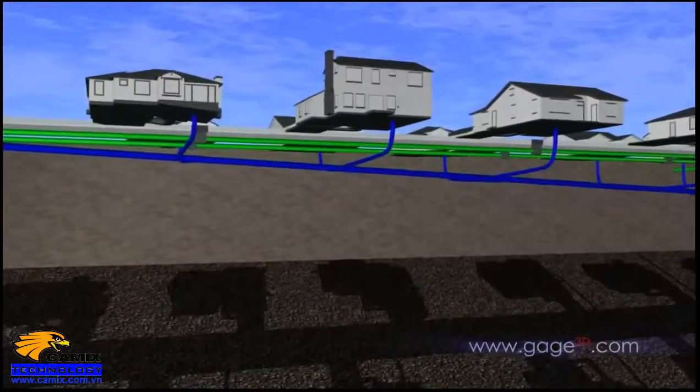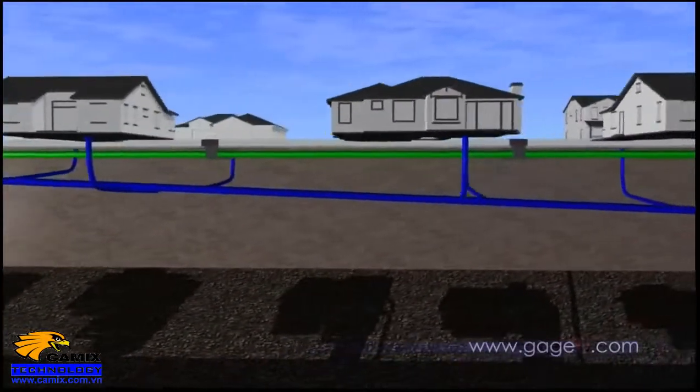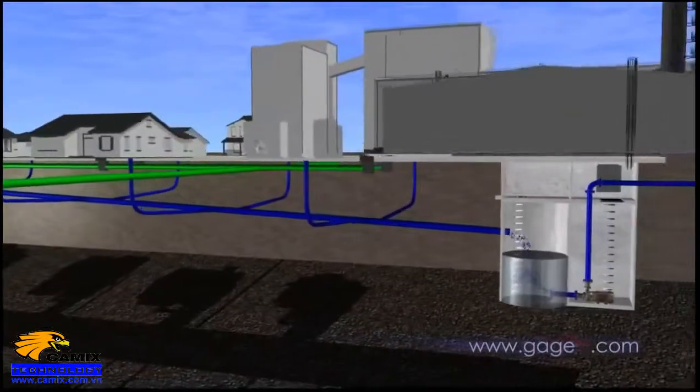According to the U.S. EPA, there are about 800,000 miles of collection systems in the U.S., along with 500,000 miles of private laterals which connect properties to the sewer system.